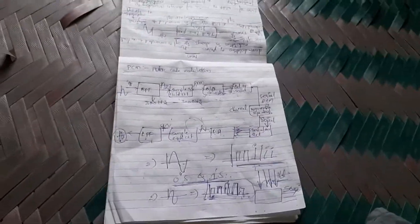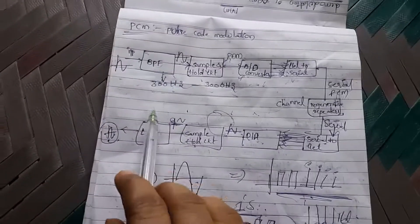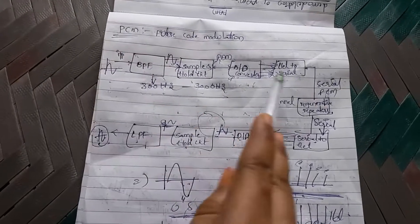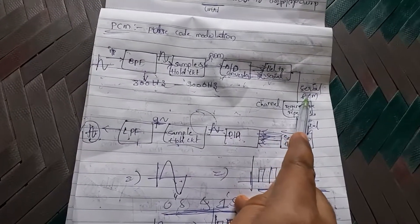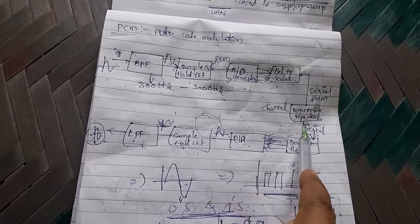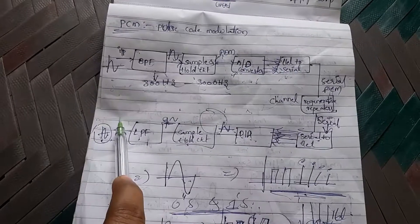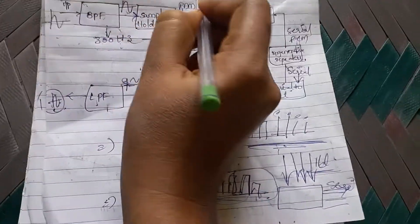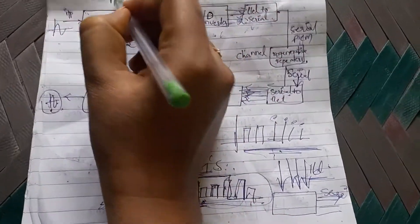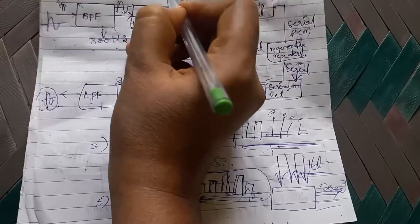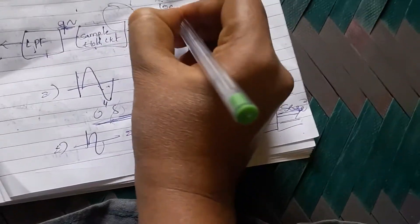This is the complete PCM process. The same input analog signal that was given at the transmitter appears at the output of the receiver. The analog signal is converted into codes at the transmitter, and those codes are converted back into a signal at the receiver.